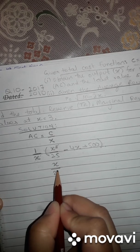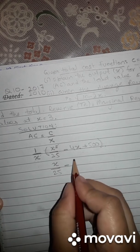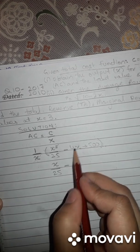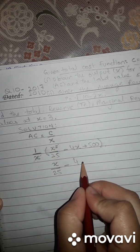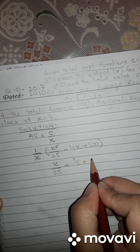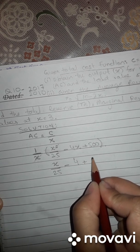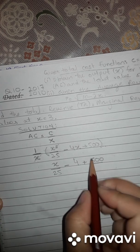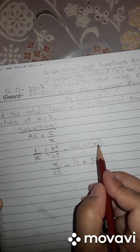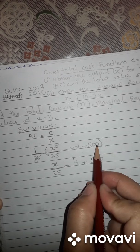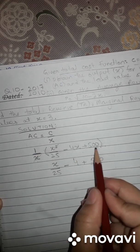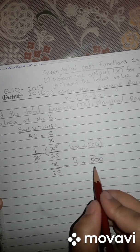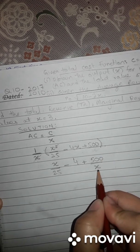So X upon 25 minus 4. X will be cut down by this X. And then we are remaining with 500. 500 doesn't have any X, so we can't cut this X with 500. We have to write over here as divide by X, so we are remaining with 500 upon X.